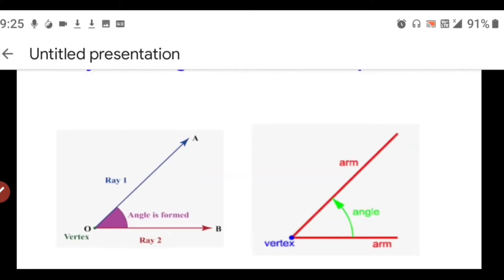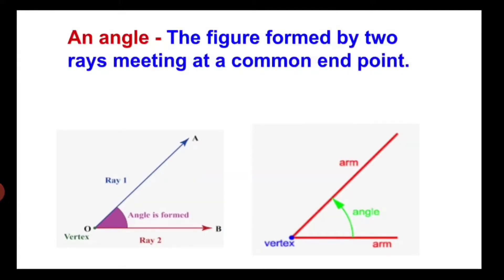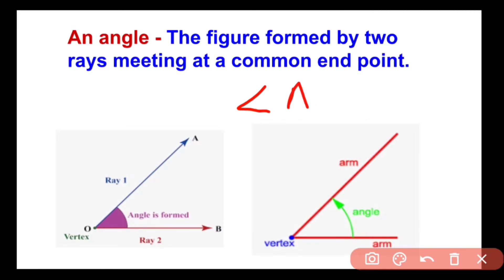The definition of an angle is: the figure formed by two rays meeting at a common end point. Their end point is common. In the first figure, the end point is O and the two rays are OA and OB. They meet each other at point O and that's why angle AOB is formed. This is the symbol for angle and then we write AOB. When two rays meet each other at one common end point, an angle is formed.